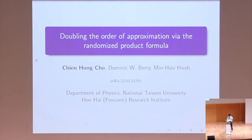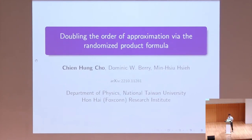This is a joint work with Dr. Barry from Macquarie University, and also Min Xu Xie from Honghai Research Institute. Today I'm going to split my talk into three parts. First, I'll talk about why Hamiltonian simulation is important. Then I'll introduce the concept of the product formula and how we use the randomized scheme to improve the performance of the product formula. And the last part, I'll introduce how we designed another randomized scheme to improve the current symmetric product formula.